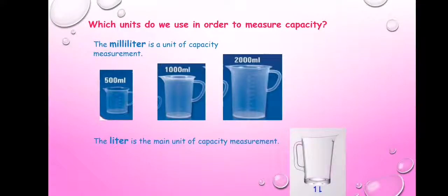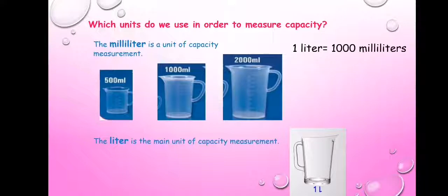This container has a capacity of one liter. So the units of measurement of capacity are milliliter and liter. What is the relation between these two units? One liter is equal to 1000 milliliters.